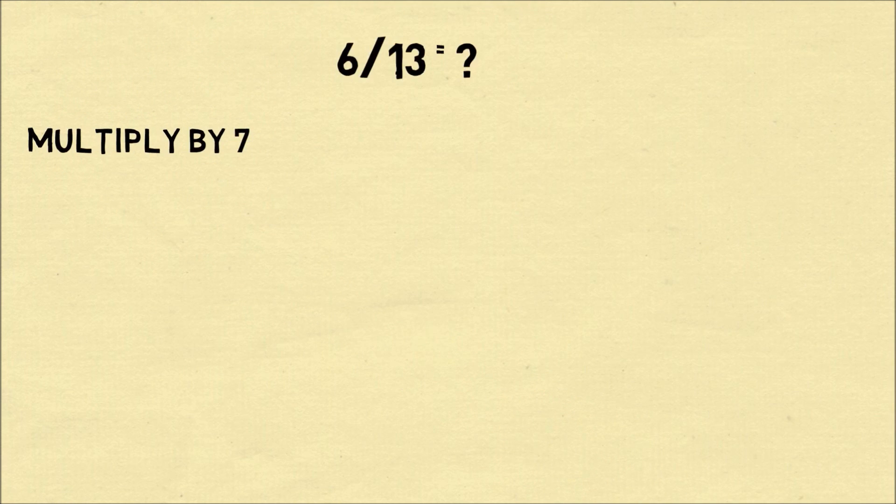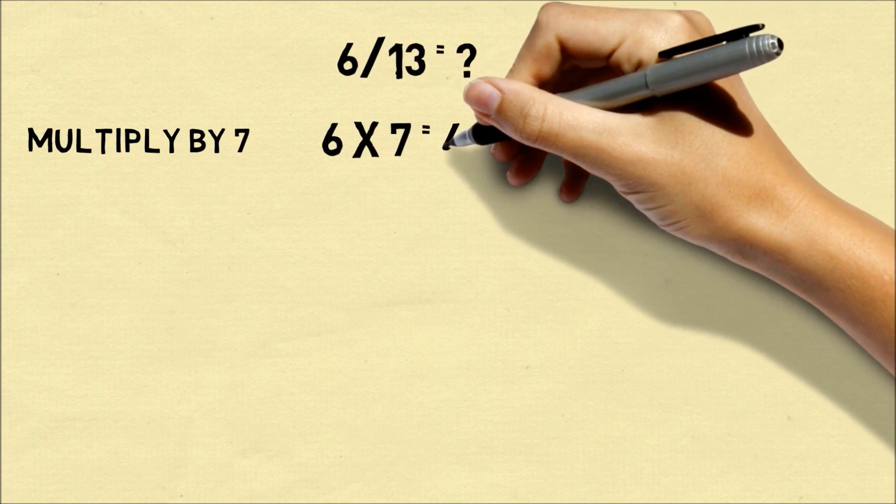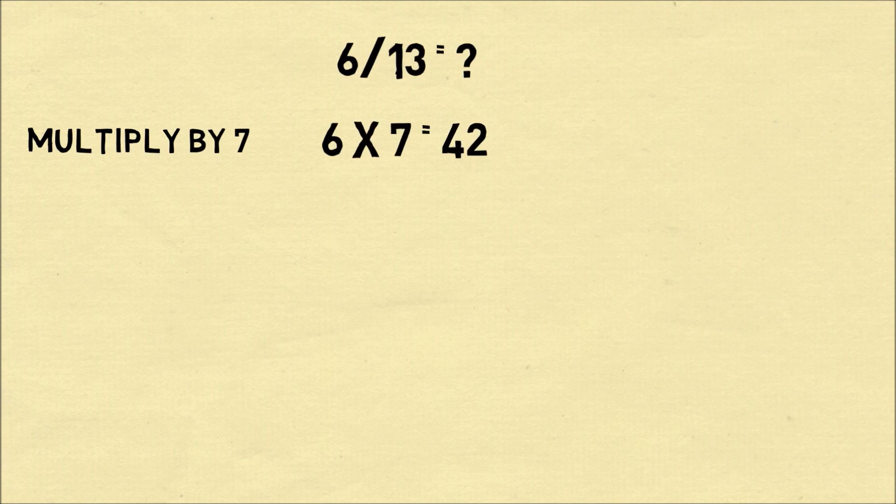The first step is to multiply the dividend 6 by the number 7. 6 times 7 is equal to 42.